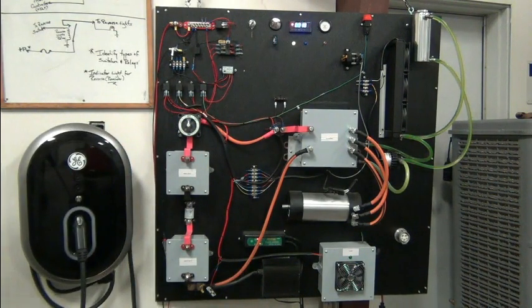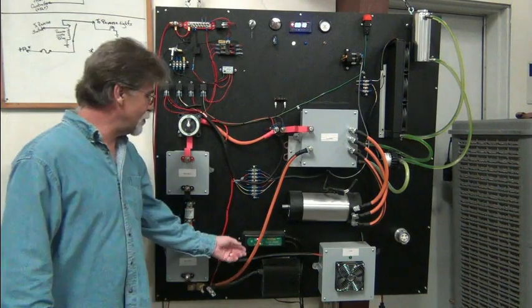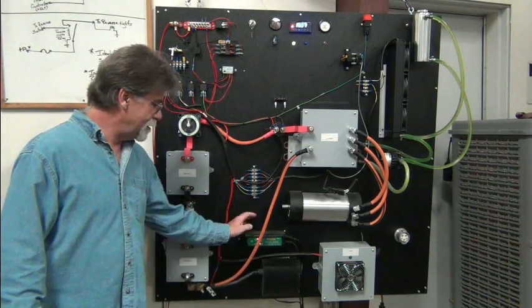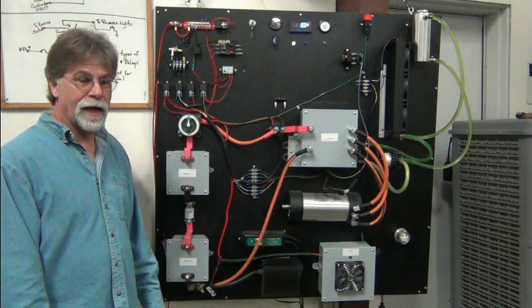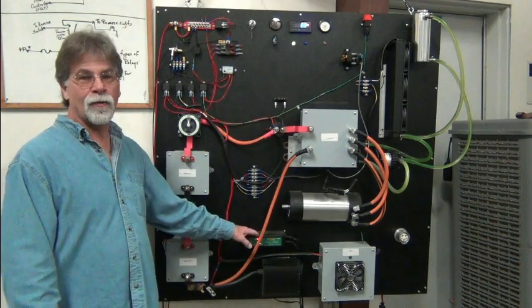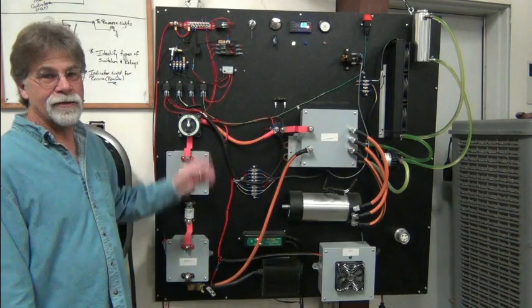The only other thing that we have that we usually include in a conversion is a trickle charger. So when the vehicle sits for any period of time, you plug this in, it's hardwired, and it just maintains your 12 volt battery.